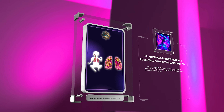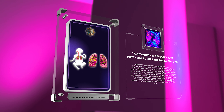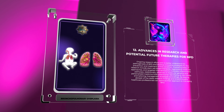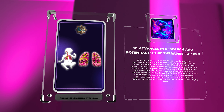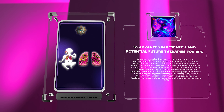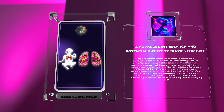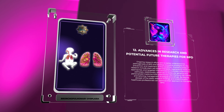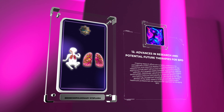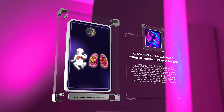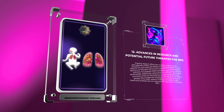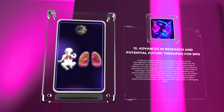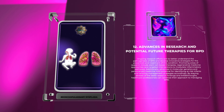Ongoing research efforts aim to better understand the pathogenesis of BPD and develop innovative strategies for prevention and treatment. Promising areas include stem cell-based therapies, regenerative medicine approaches, and targeted interventions to modulate inflammatory pathways. Advances in molecular genetics and personalized medicine hold potential for identifying at-risk infants and tailoring management strategies accordingly. By staying abreast of the latest research findings, healthcare professionals can optimize their approach to managing BPD.